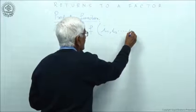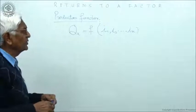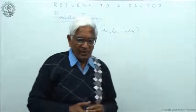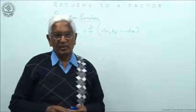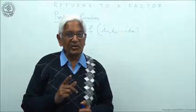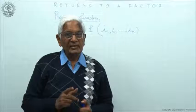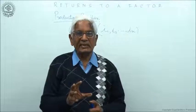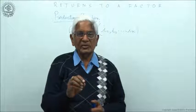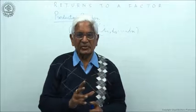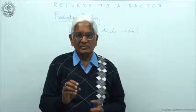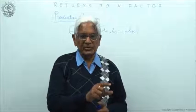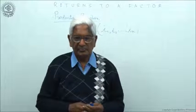Q here means the quantity of output produced. X refers to the commodity as a function of input 1, input 2, up to input n. If there are four inputs, n will be 4; if there are ten inputs, n will be 10. This is the general form of the production function. Note that in this function we are only talking about physical inputs and physical output — we are not talking about the price of input or the price of output.